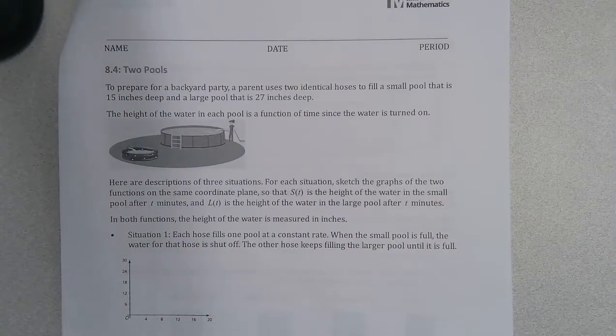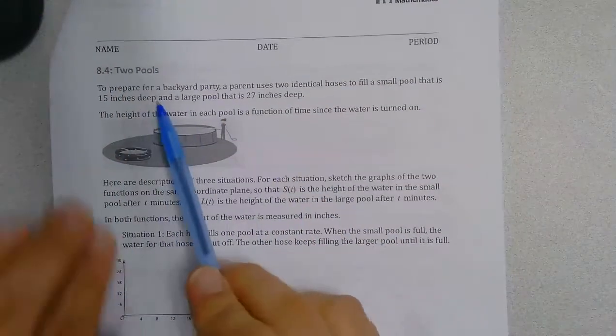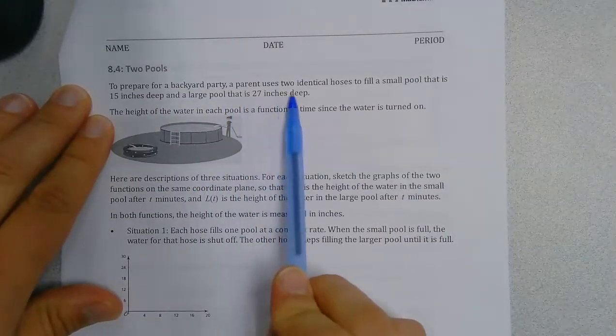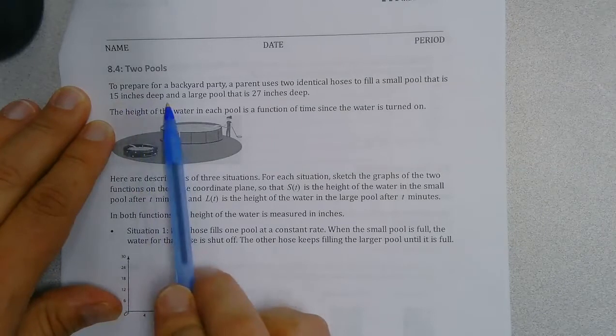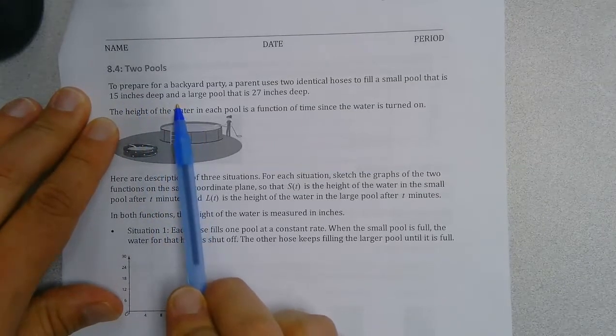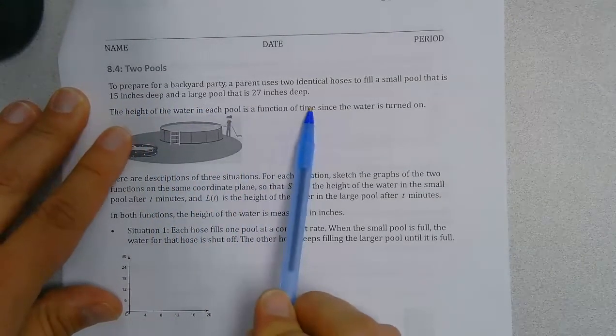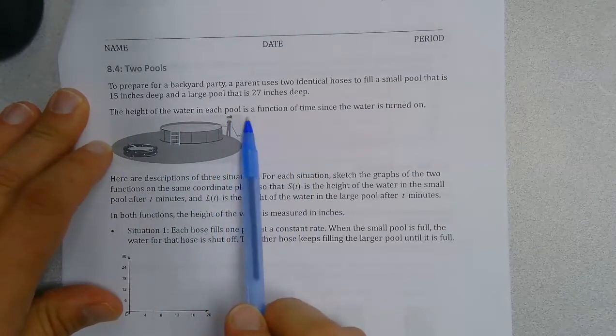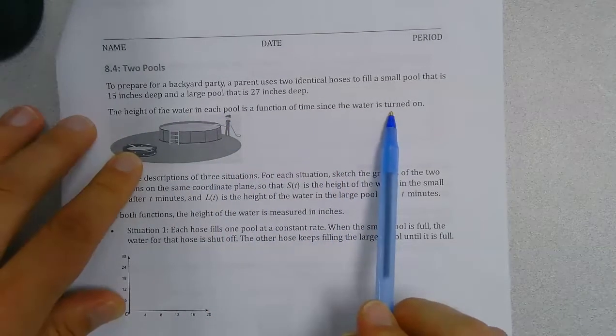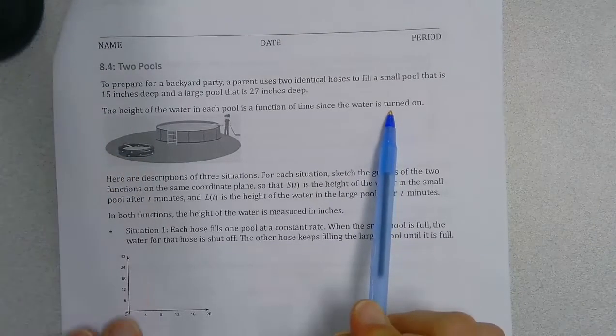Now we're going to look at scenarios involving two pools. To prepare for a backyard party, a parent uses two identical hoses to fill a small pool that's 15 inches deep and a large pool that's 27 inches deep. The height of the water in each pool is a function of time since the water's turned on.